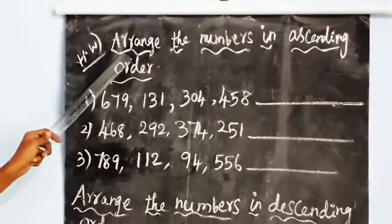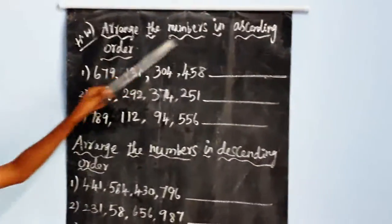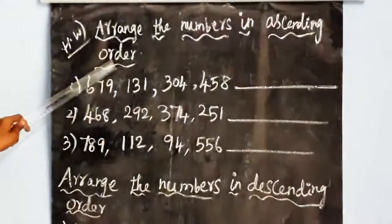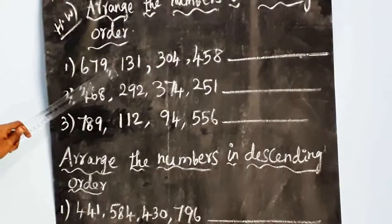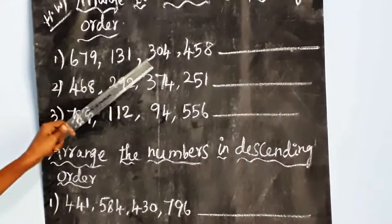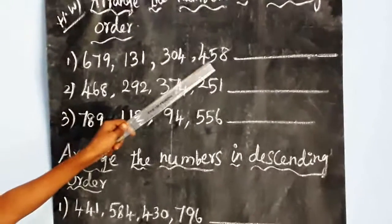This is the form of arrangement of numbers in ascending order. Ascending order means smallest to greatest. So first sum: 679, 131, 304, 458.